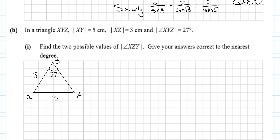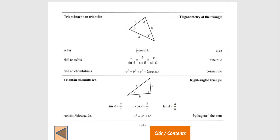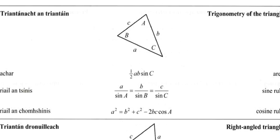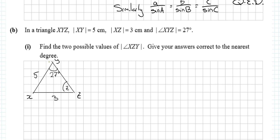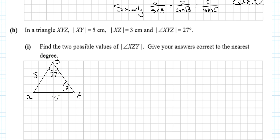Find the two possible values of angle XZY. Is it a right-angle triangle? No, we're assuming not. Going to the log tables on page 16, do we use the area formula? No. Do we use the sine rule or cosine rule? To use the sine rule you need a side and its opposite angle — a pair. We do have a pair here, so we'll use the sine rule.